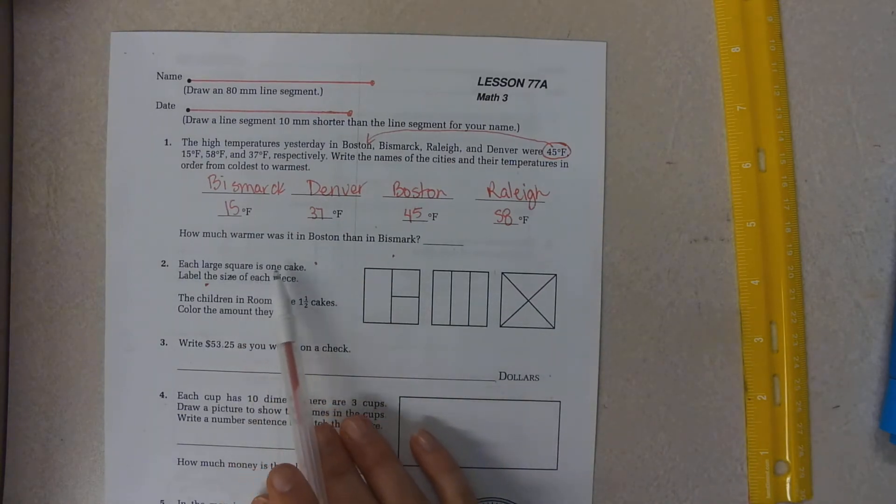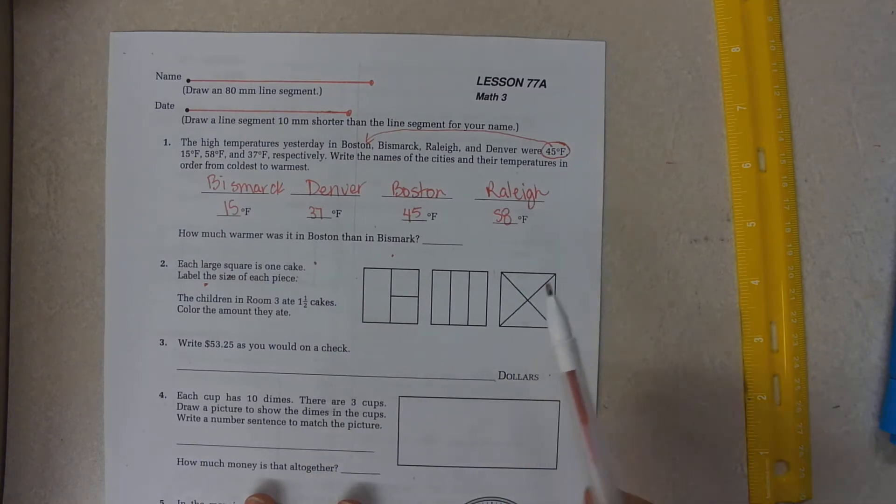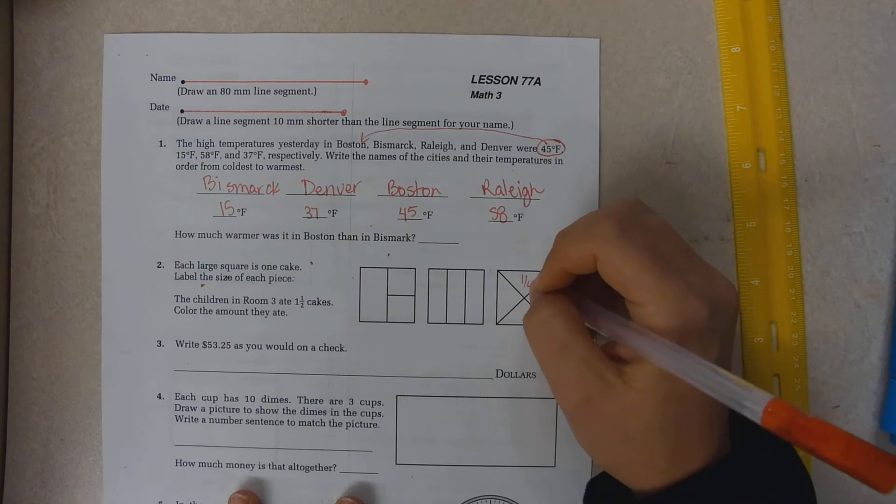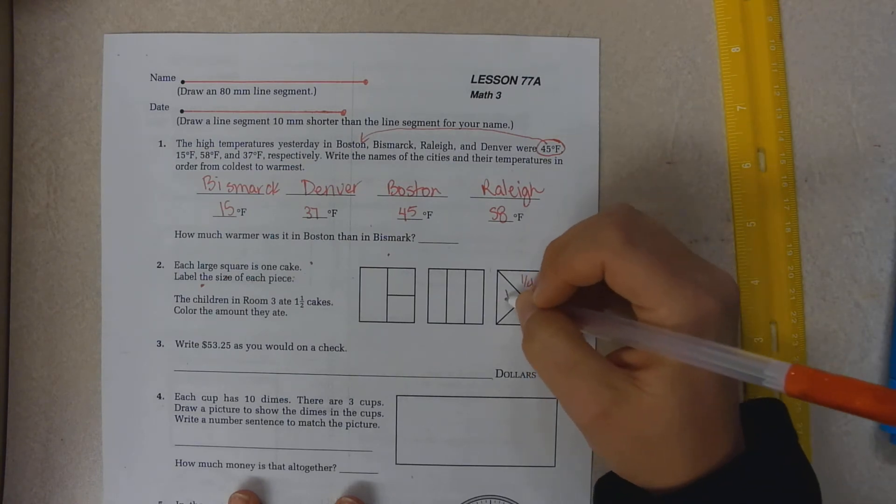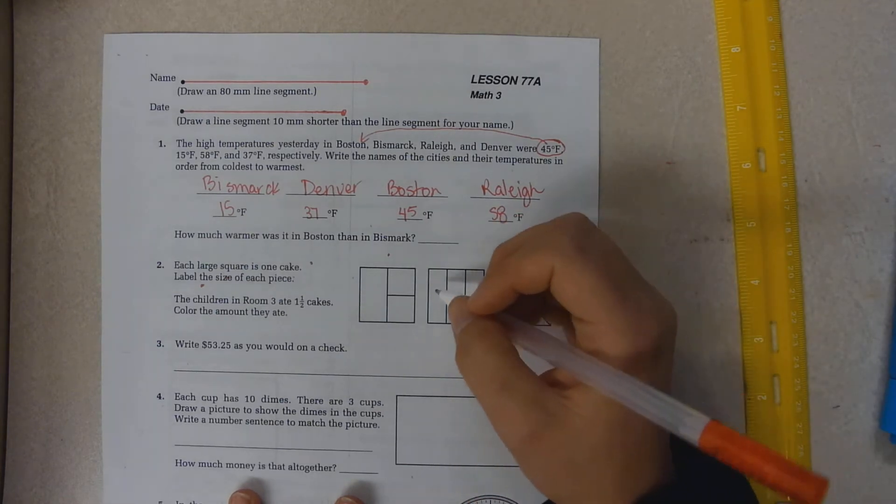Each large square is one cake. Label the size of each piece. Well, this one's easy because it's all equal. So these are each one-fourth. And it takes four-fourths to make a whole. This one's easy because they're all equal and they're one-third.